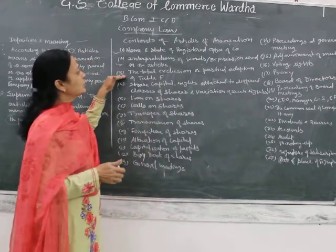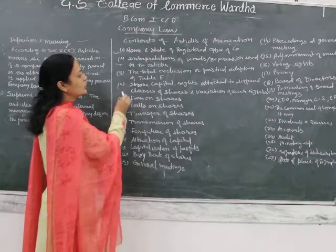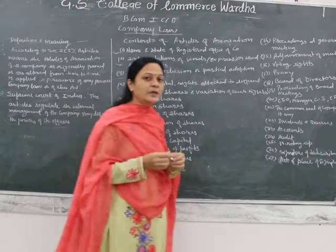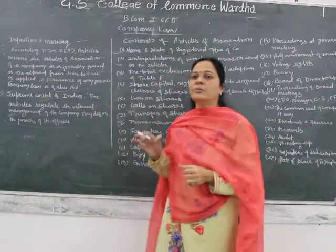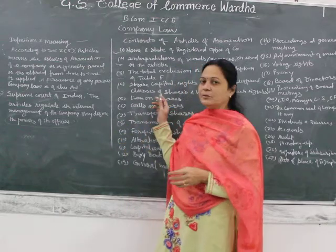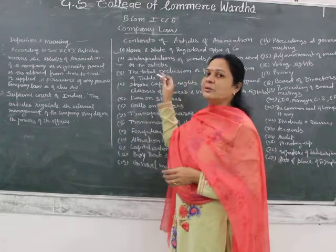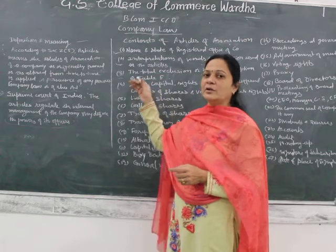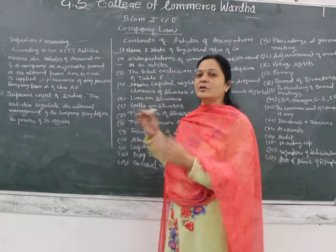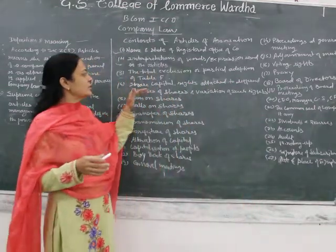The third content is the total exclusion or partial adoption of Table F. A public limited company, instead of preparing its own articles of association, can adopt Table F. What part of Table F is included in your articles or what part is excluded from your articles must be mentioned in your articles of association.